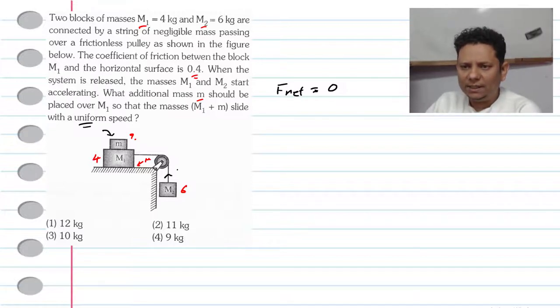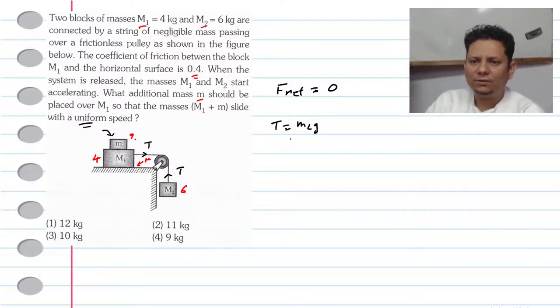Looking at the tension forces: tension is here and here. If we talk about the tension, the tension force will be equal to m2g because your acceleration is zero, so the tension value will be equal to m2g.